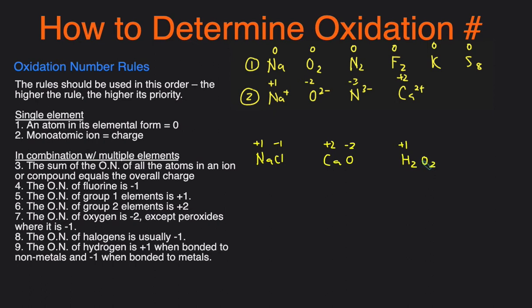Oxygen is normally −2, but since this is hydrogen peroxide, it's −1. This is one you may see on your exam to check if you know all your rules. Now let's look at lithium hydride. Lithium is a group one element, so it's +1. Hydrogen is normally +1, but when bonded with a metal it's −1, and lithium is a metal, so hydrogen is −1 here.